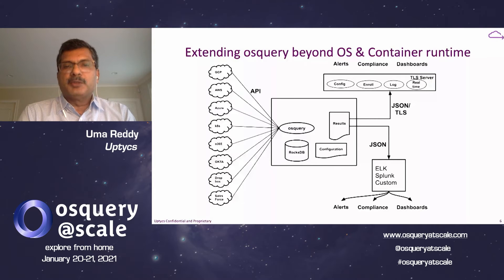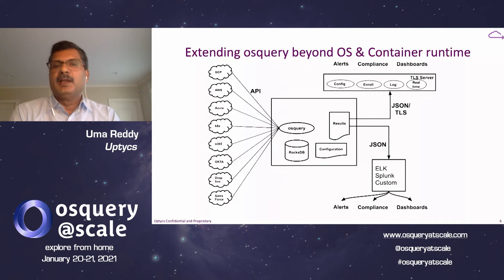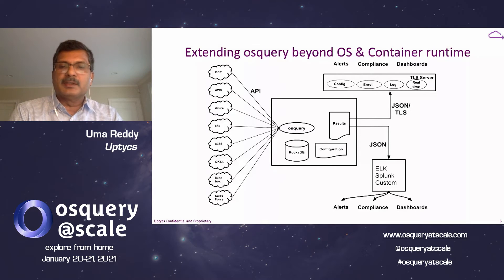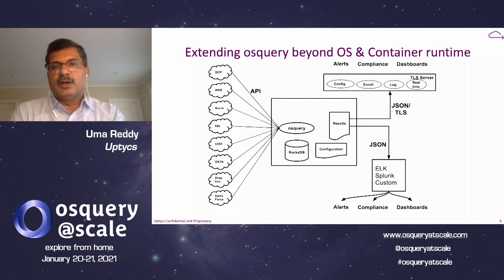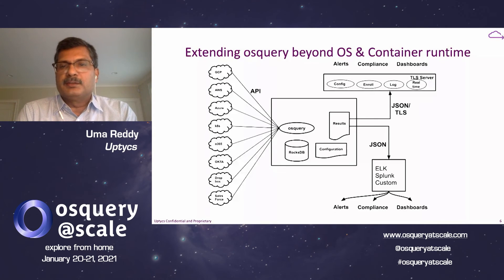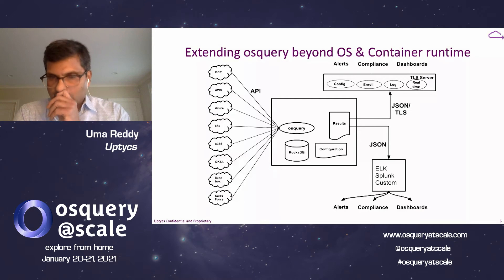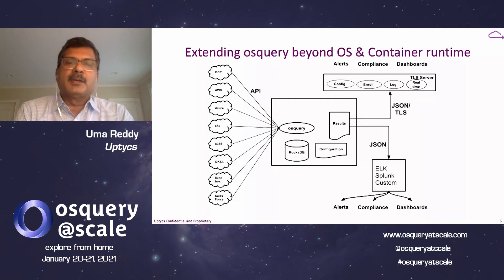Two popular ways to get data out of OS Query: the file system approach, where you write the results to a file and export it to an ELK stack, Splunk, or any custom software you built; and you can send the data in a streaming fashion to a TLS server. Both approaches let you apply analytics on top of the data to get insights into compliance and dashboards.